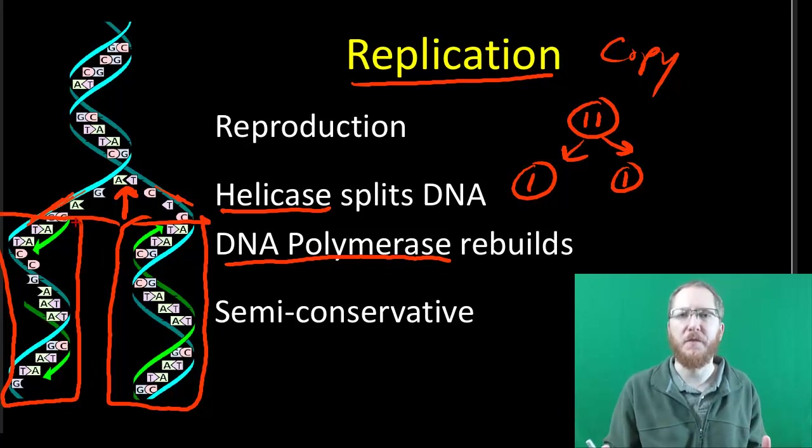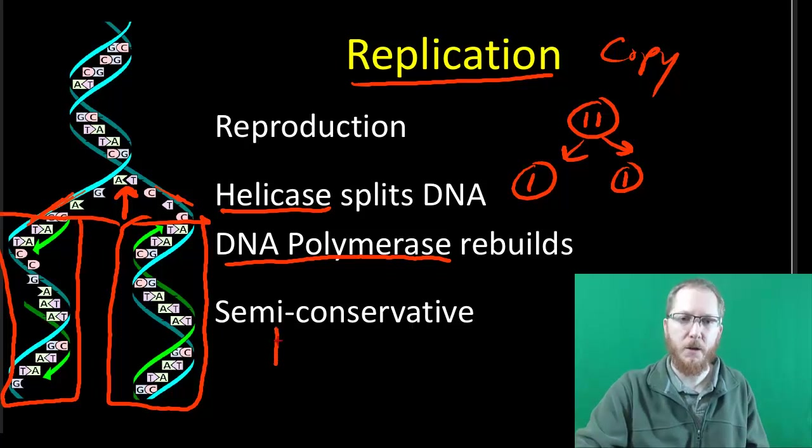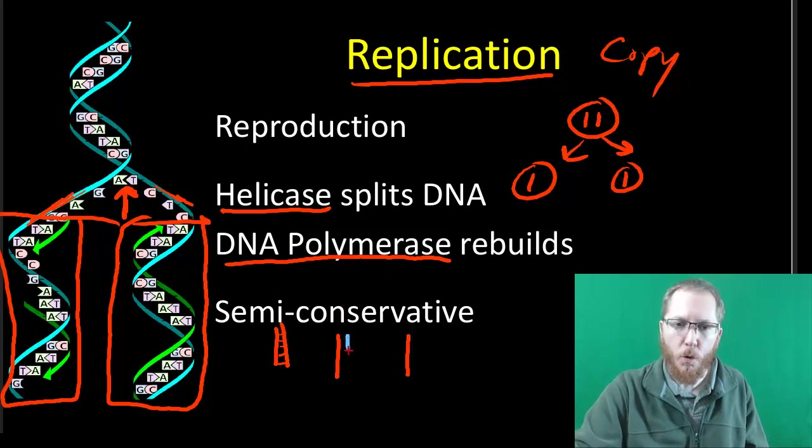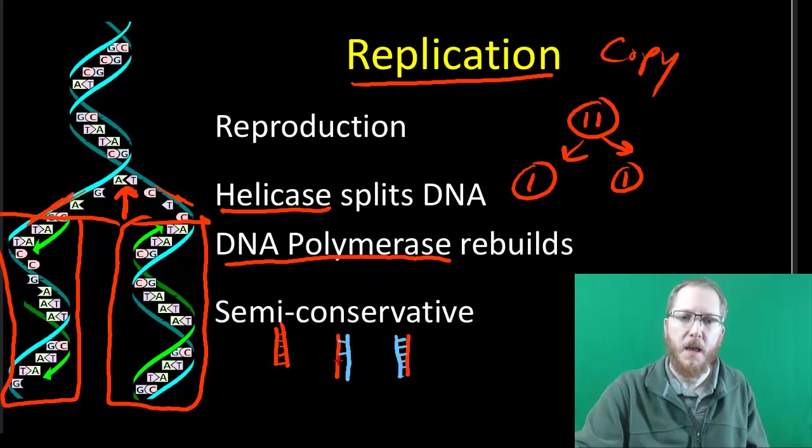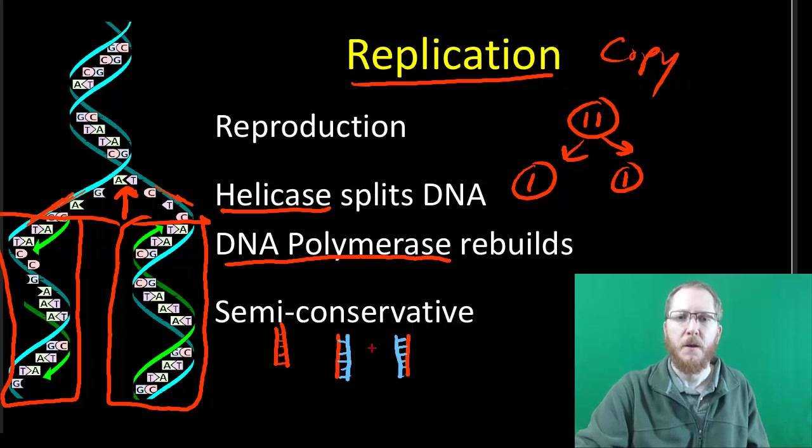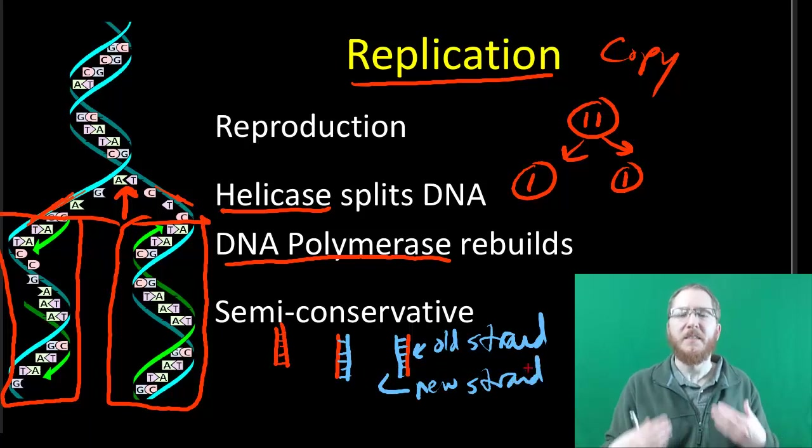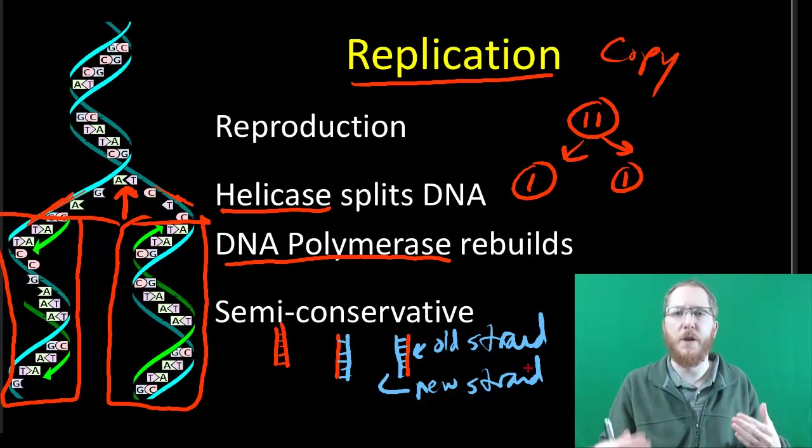You might see this term semi-conservative when we talk about replication. And what that means is when I rebuild my new strands, each of my copies will consist of one old strand, that's from the original, and then one new one. This is what's called semi-conservative because the red one is the old strand from the original DNA molecule, and then the blue one is going to be the one that we newly built. So conserve means to keep, semi-conserve means we kept one of the original strands but not both.